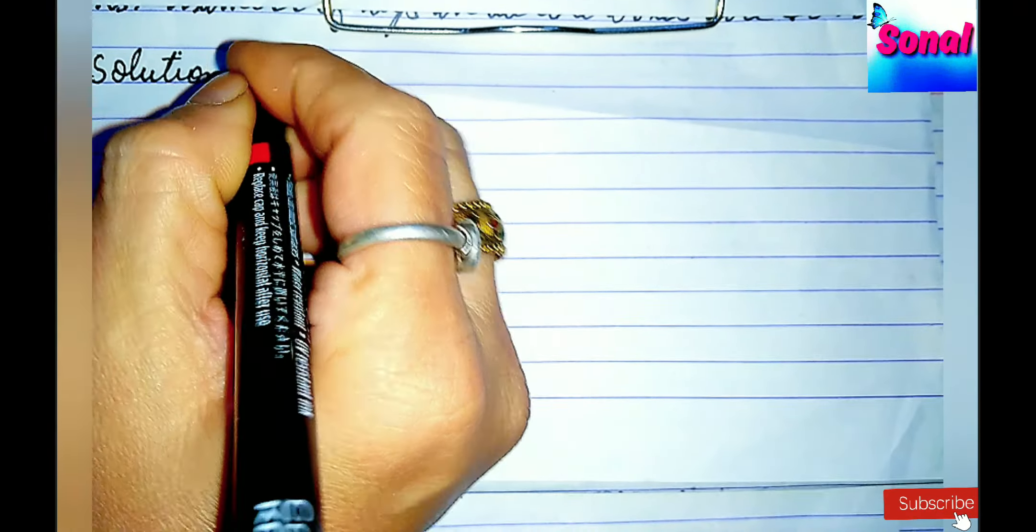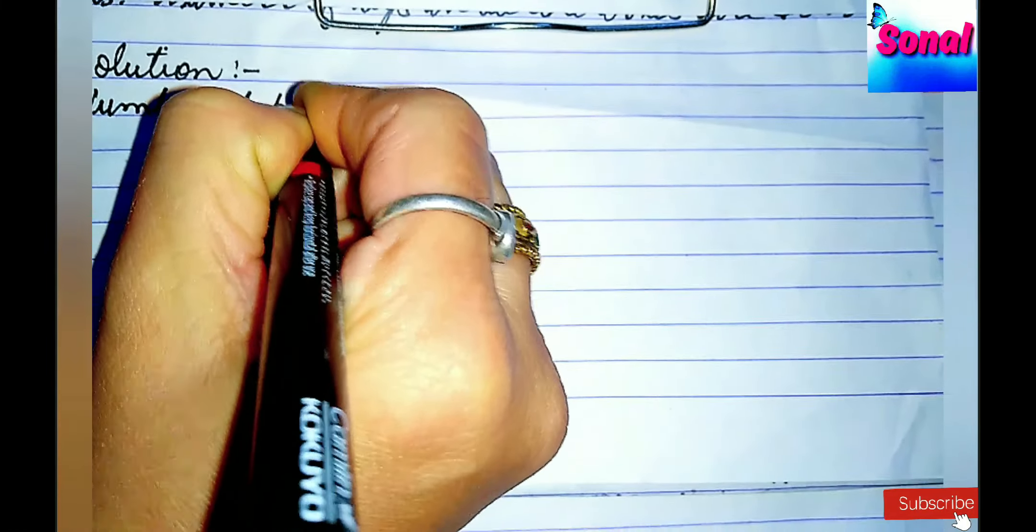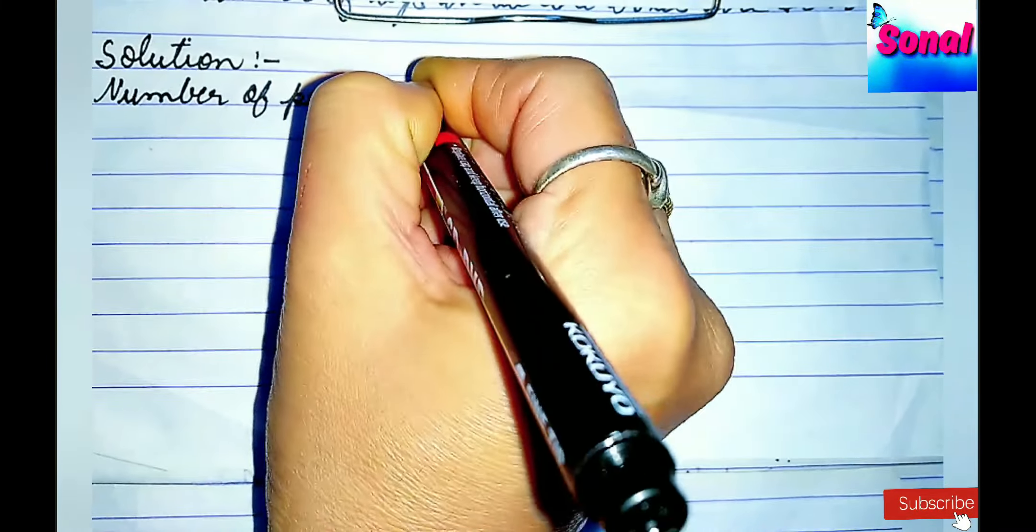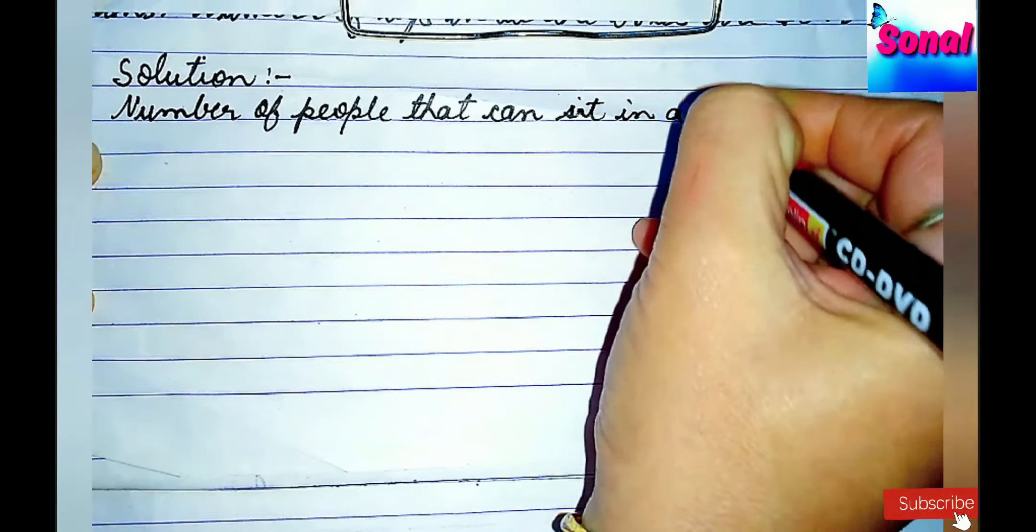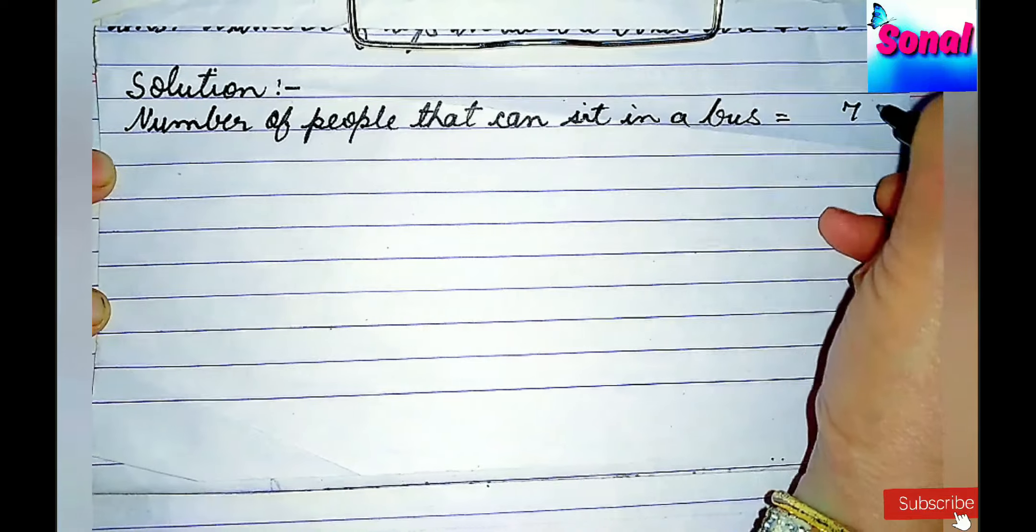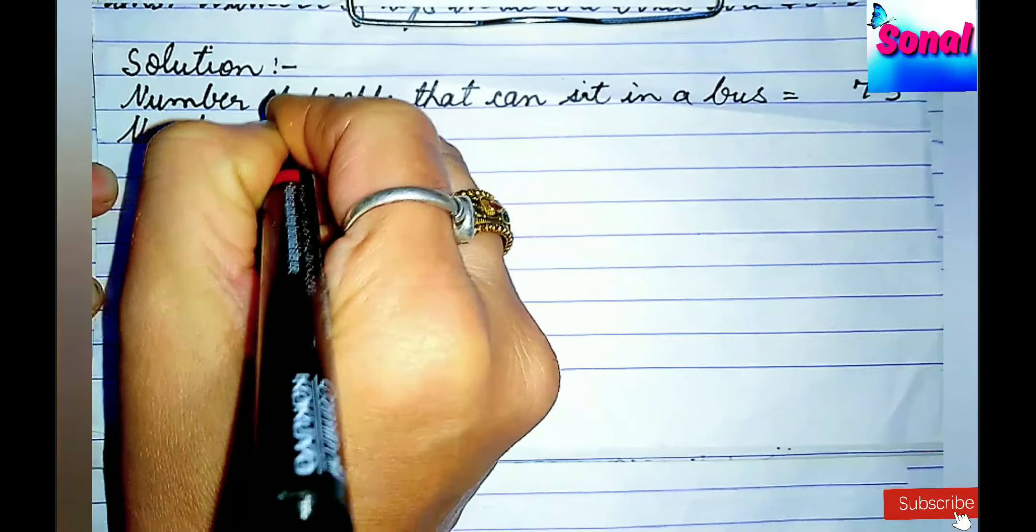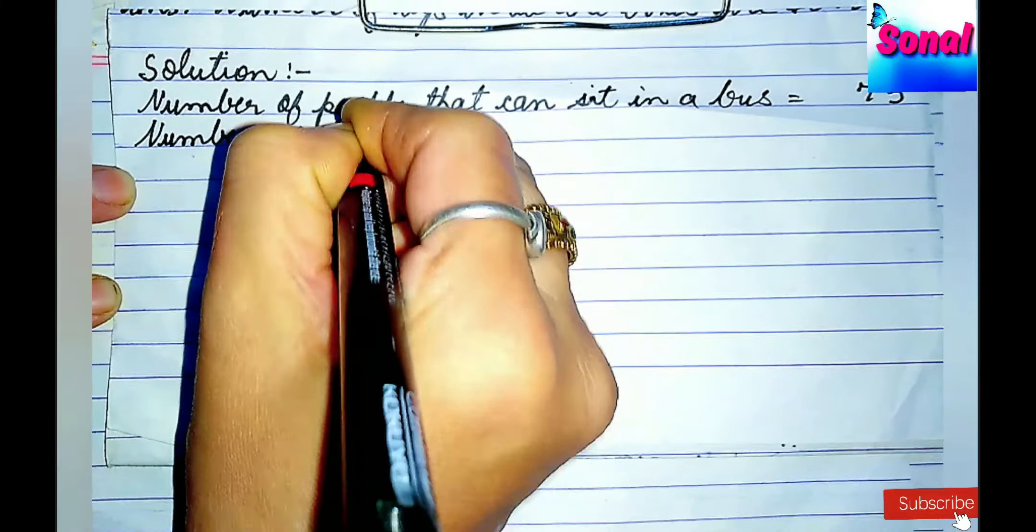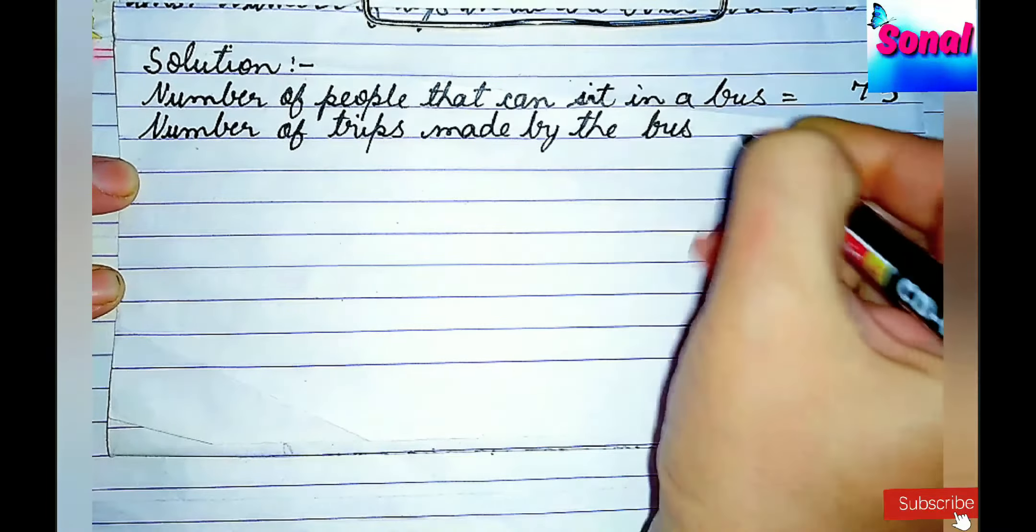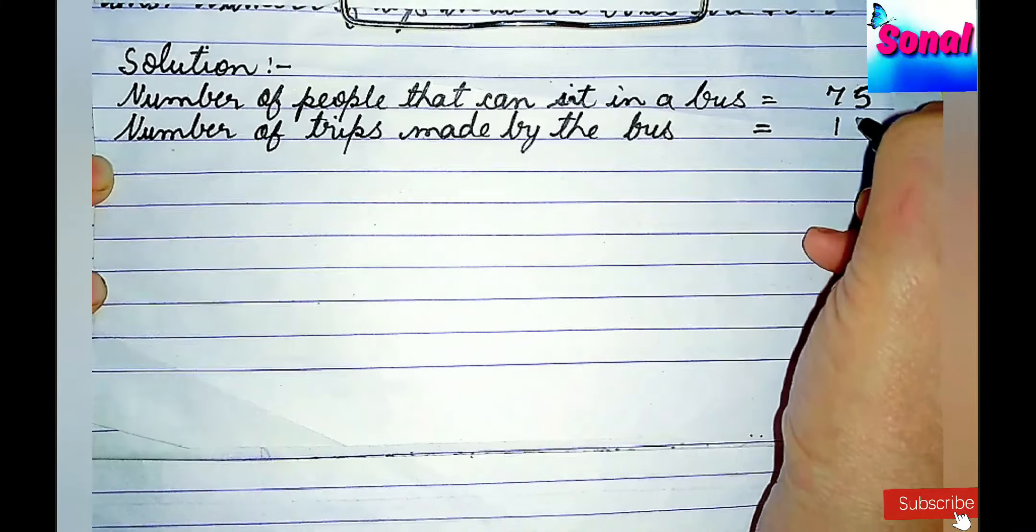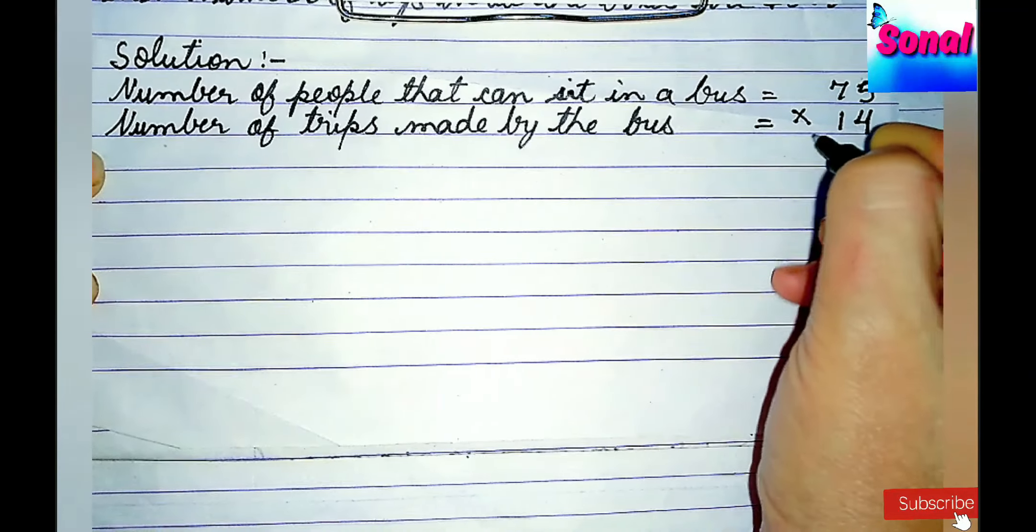Children, so the solution for this question is number of people that can sit in a bus is equal to 76. Number of trips made by the bus, 14 trips. Now, we will multiply both of them.